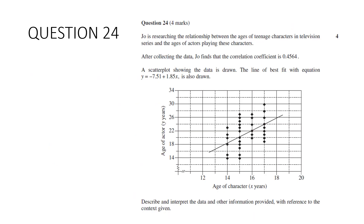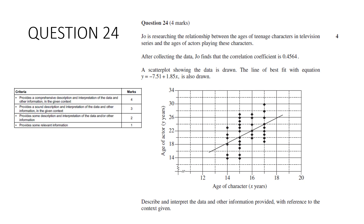Question 24. Joe is researching the relationship between the ages of teenage characters in television series and the ages of actors playing these characters. After collecting data, Joe finds the correlation coefficient, draws a scatterplot, and draws a line of best fit. Describe and interpret the data with reference to the context. This is worth four marks. Basically, we need to say four things.